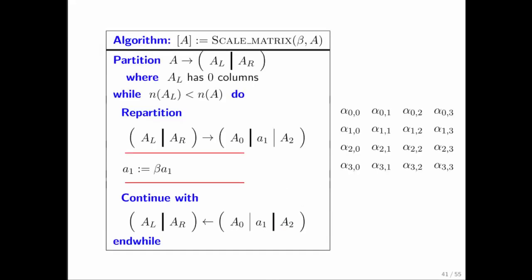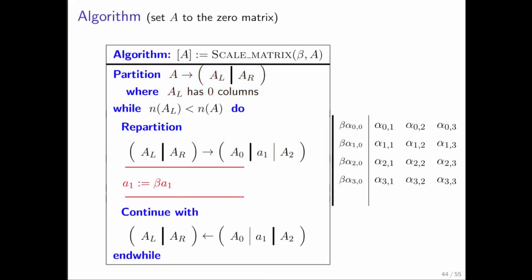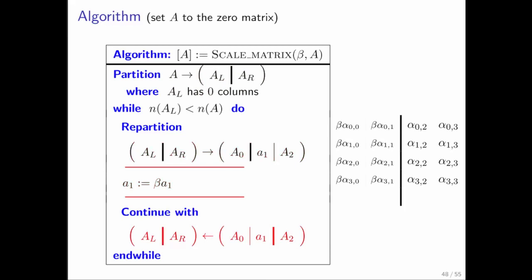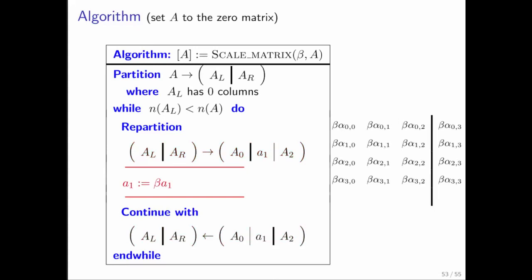Let's look at an algorithm that scales a matrix by a scalar beta. You've seen these enough that we can go through this quickly: you partition, expose, update, move on — repeating expose, update, move on for each column — and then you're done.